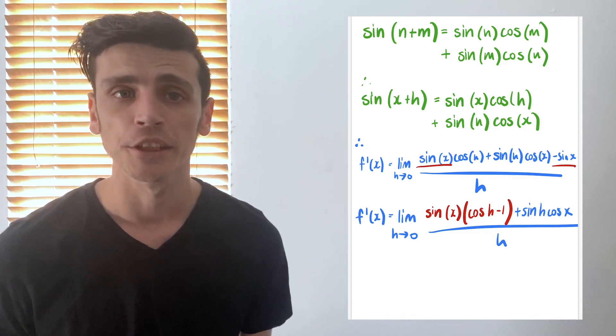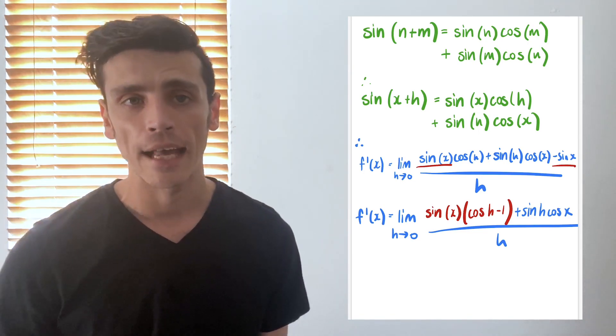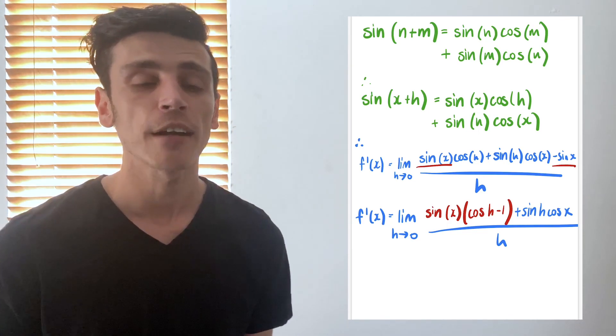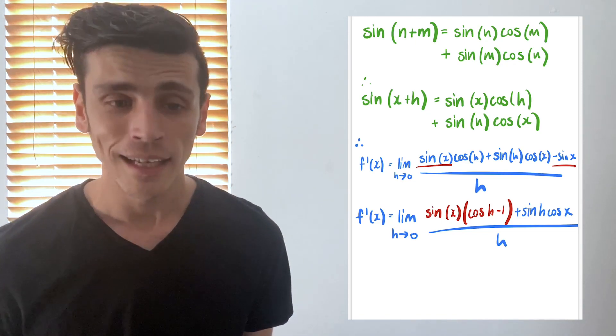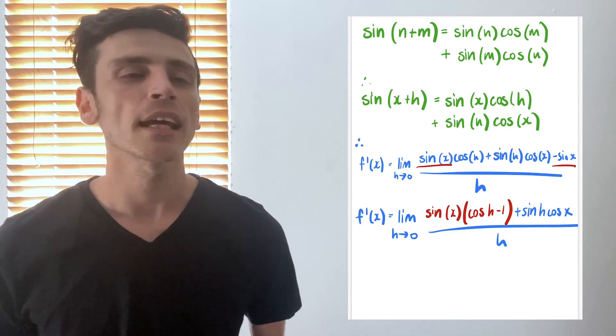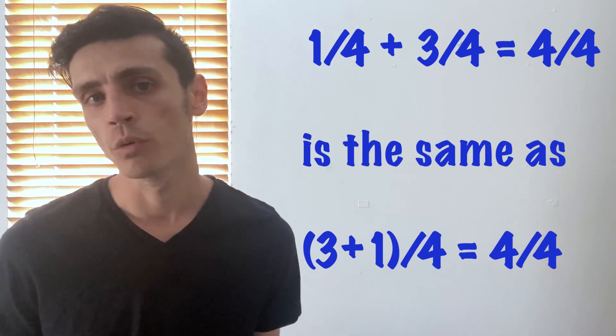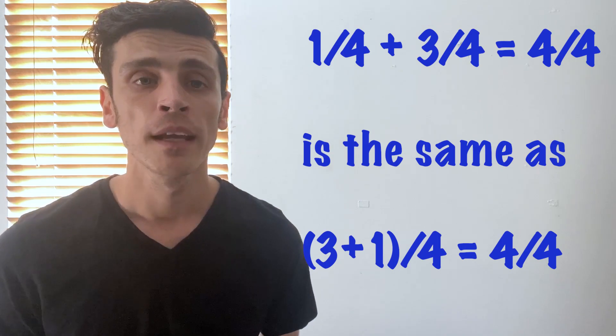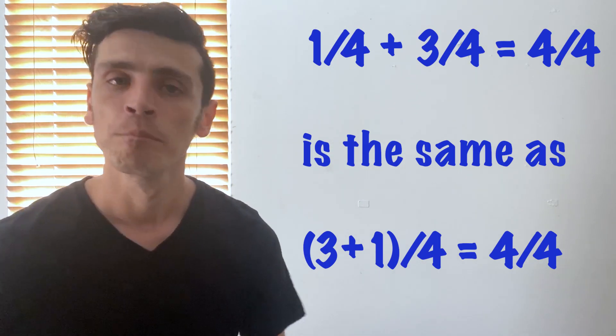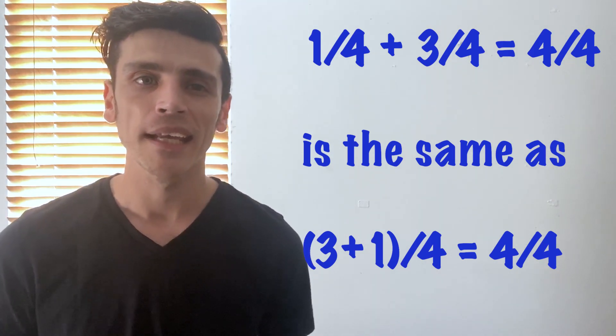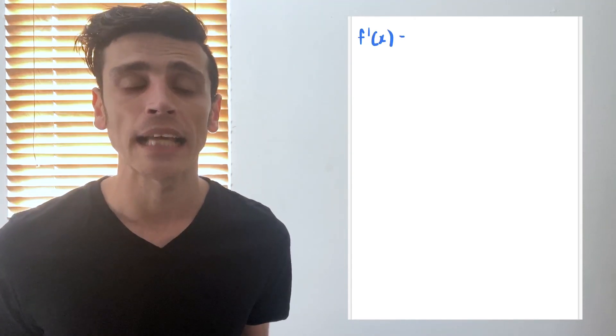We know about fraction addition rules that fractions need the same denominator to add or subtract. So we can actually break this apart. It's just like if you had 1/4 plus 3/4 — you can combine them into 4/4, but you could also break 4/4 back into 1/4 plus 3/4, and it means the same thing. So we're going to separate the fraction to make it a bit nicer to solve. The great thing about limits is that they have additive properties — I can find the limit of one fraction and add it to the limit of the other fraction and still get the same answer.